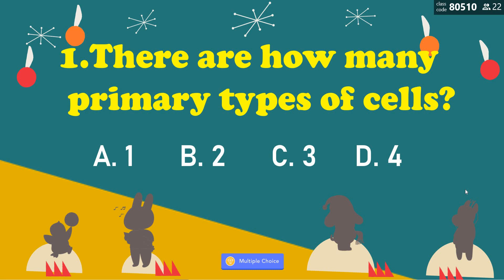Number 1: There are how many primary types of cells? Is it A, 1; B, 2; C, 3; or D, 4? That is correct — it is letter B. We have two primary types of cells.